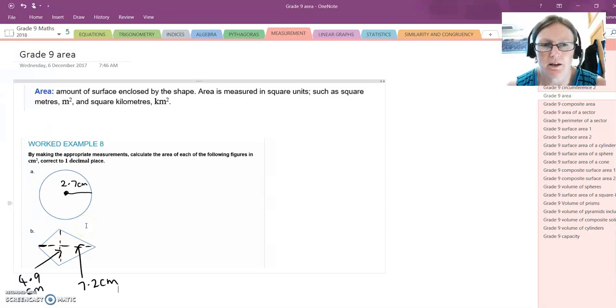Okay, we're now moving on to area. Area is the amount of surface enclosed by the shape. It's measured in square units such as metres squared, kilometres squared, centimetres squared, etc.